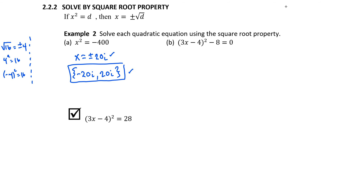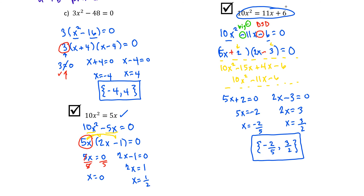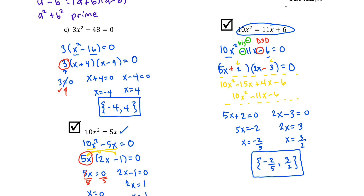The square root property is fast and efficient—you'll probably like it better than factoring—but remember it only works on a subset of equations. I cannot apply the square root property to an equation that has a linear term, the x term. If your equation is missing the x term and you only have the quadratic and the constant term, then you can use the square root property.